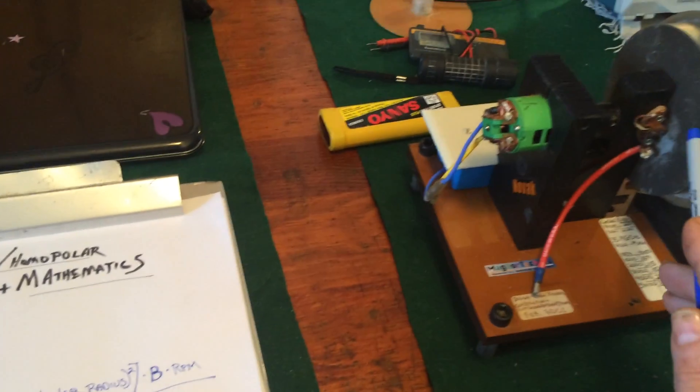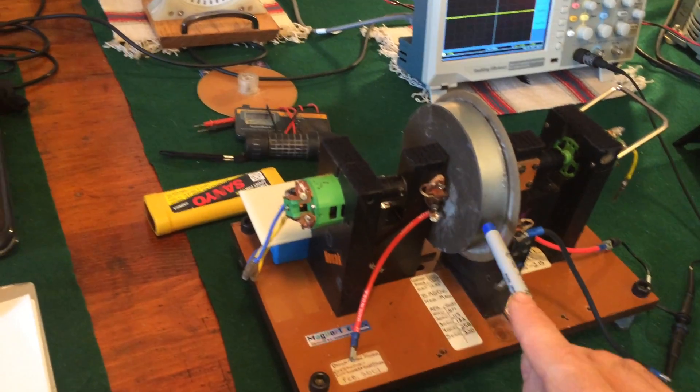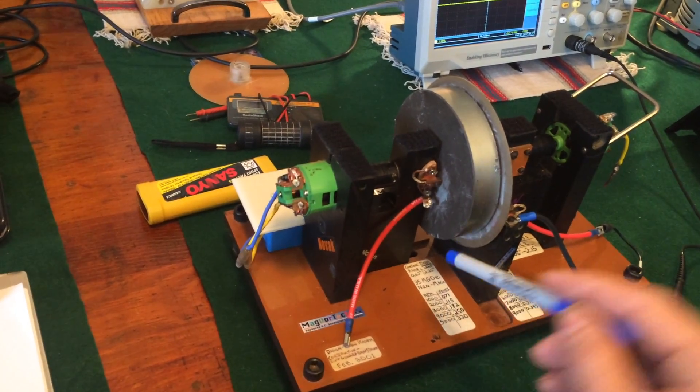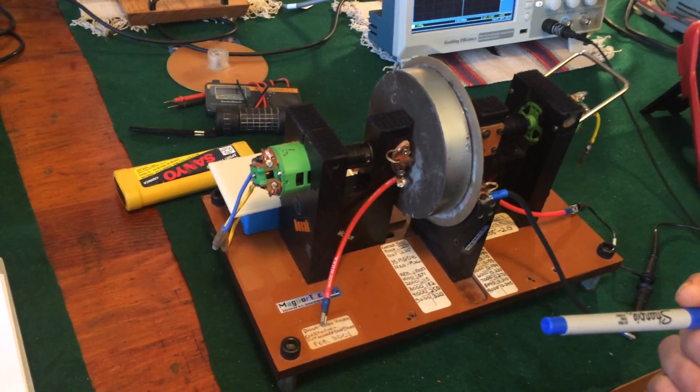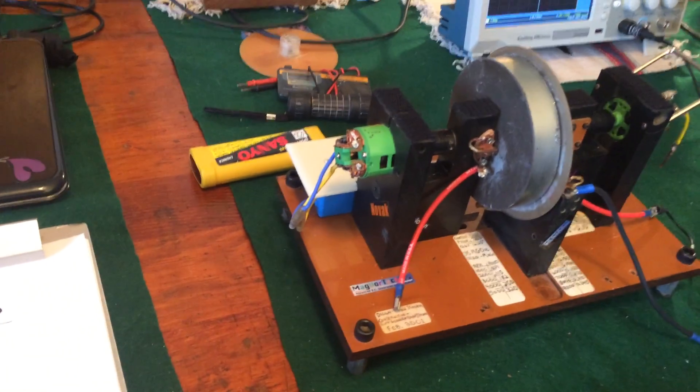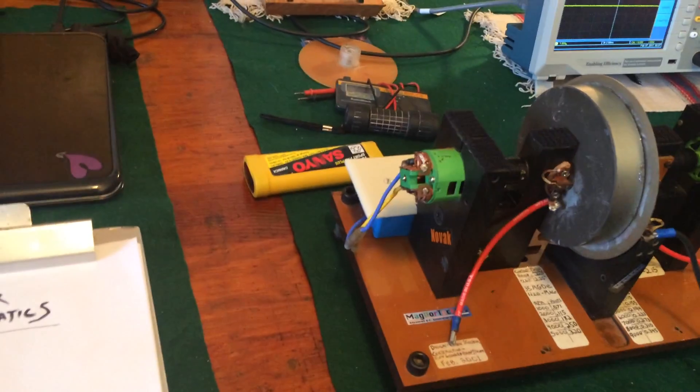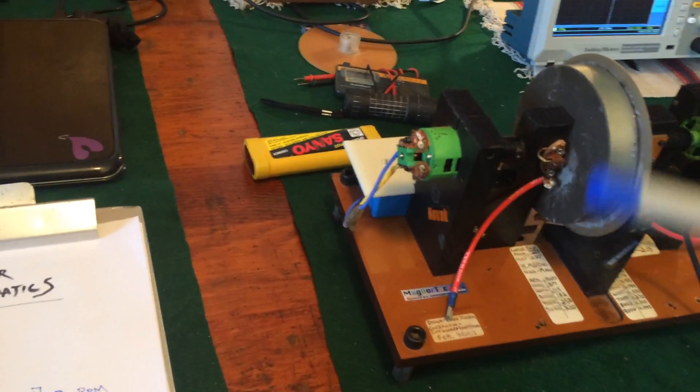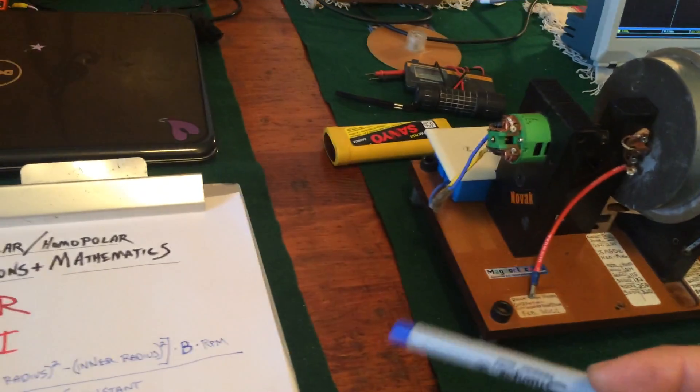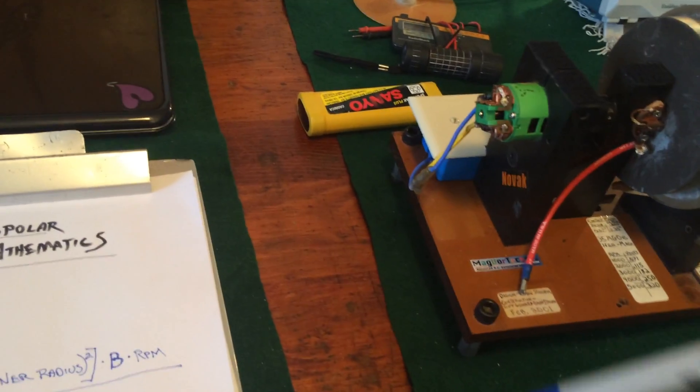So the most important factors in the machine are the radius, because you want that high radius to get that huge multiplication of voltage, and you want that multiplication of voltage to get the multiplication of current, and then you get this compounding effect with the power.